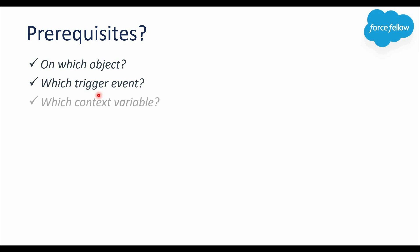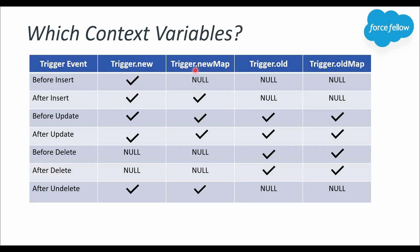So in an insert operation, if you want to use the record ID, you always have to go with the after insert event. Our third question is: which context variable will we use to access the current records? As discussed in the first video of this series, triggers have four context variables: Trigger.new, Trigger.newMap, Trigger.old, and Trigger.oldMap. Trigger.new returns new or modified records as a list, and Trigger.newMap returns them as a map. In our requirement, we will use Trigger.new to iterate all accounts involved in the current DML operation.